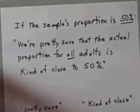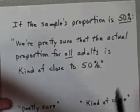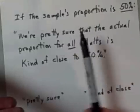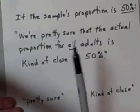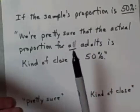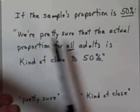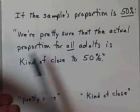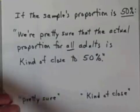Based on that, statisticians want to come up with a statement about the entire population. Here's the type of statement a statistician makes based on a sample: we're pretty sure that the actual proportion for all adults is kind of close to fifty percent.